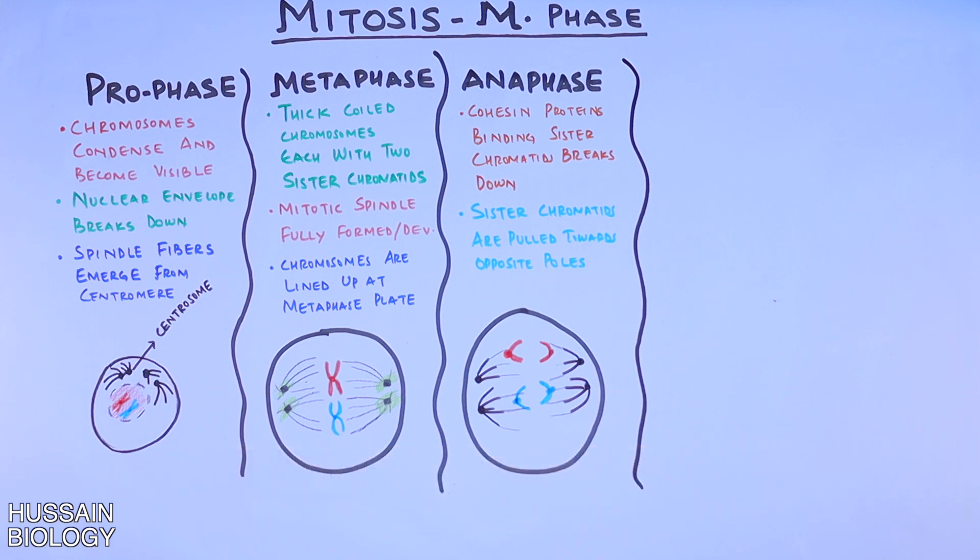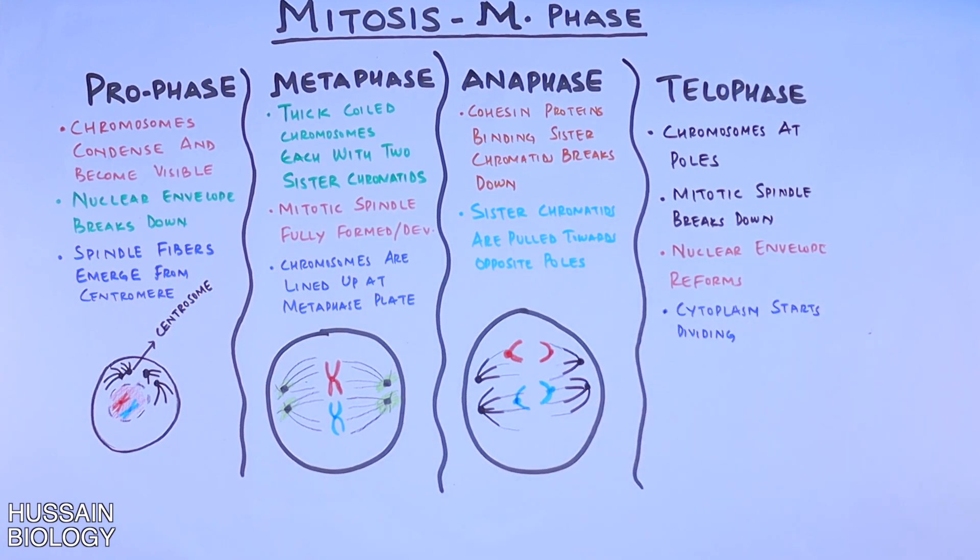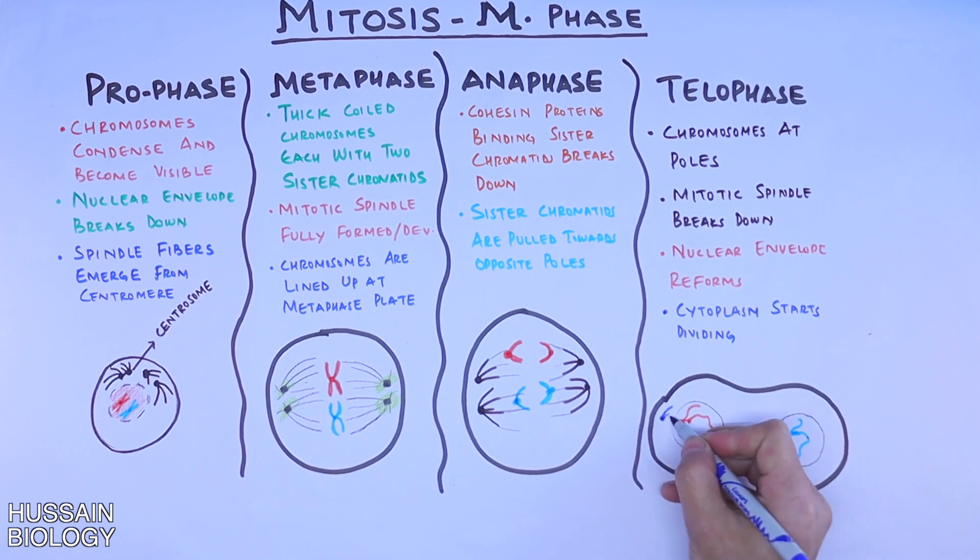And finally, we have the last phase, which is telophase, where we can see the chromosomes are at the poles. The mitotic spindle breaks down, the nuclear envelope reforms, and the cytoplasm starts dividing. This all has been shown in the diagram, and this concludes the M-phase.